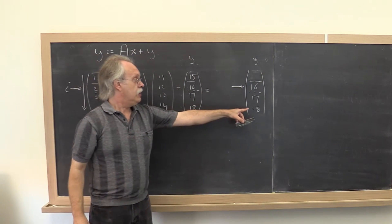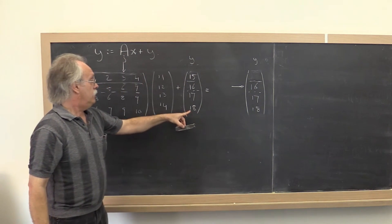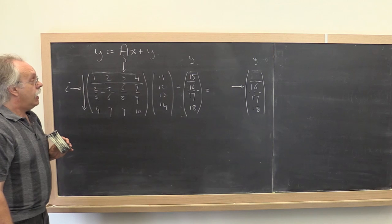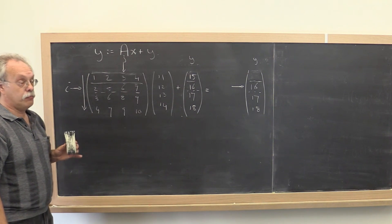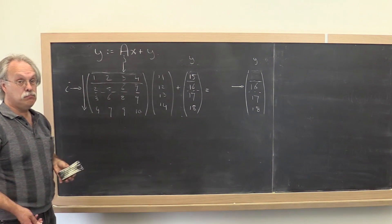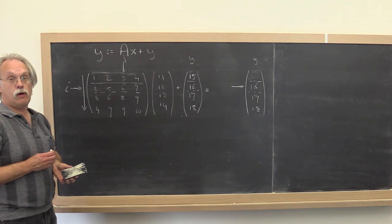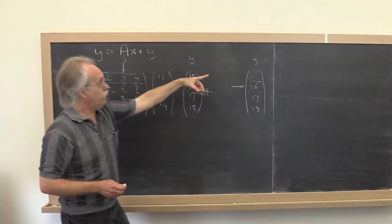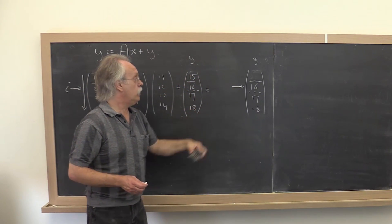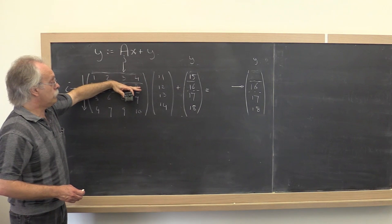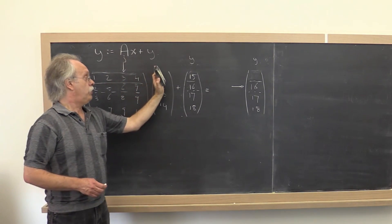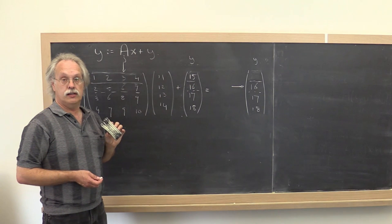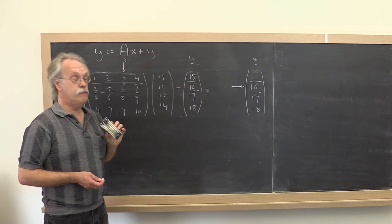And remember, this is y as it's being overwritten. And here we have the original y. How would we then translate this into MATLAB code? Well, in MATLAB, you probably wouldn't use a while loop. You probably would use a for loop. So you would say, for every element in y, what we need to do is take a dot product of the corresponding row with the vector x, and then add to that the entry in y.